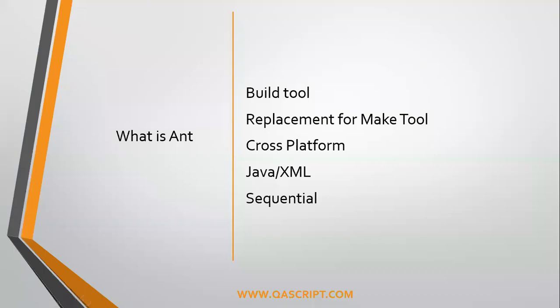Let's discuss the difference between Ant and Maven. Firstly, what is Ant? It's a build tool that was made as a replacement for an earlier tool called the Make tool, which was also a build tool but had a lot of problems. One of the biggest problems Make had was that it was not cross-platform. Ant solved this, so you could build your projects across platforms without any problems. Ant is built on Java and XML.